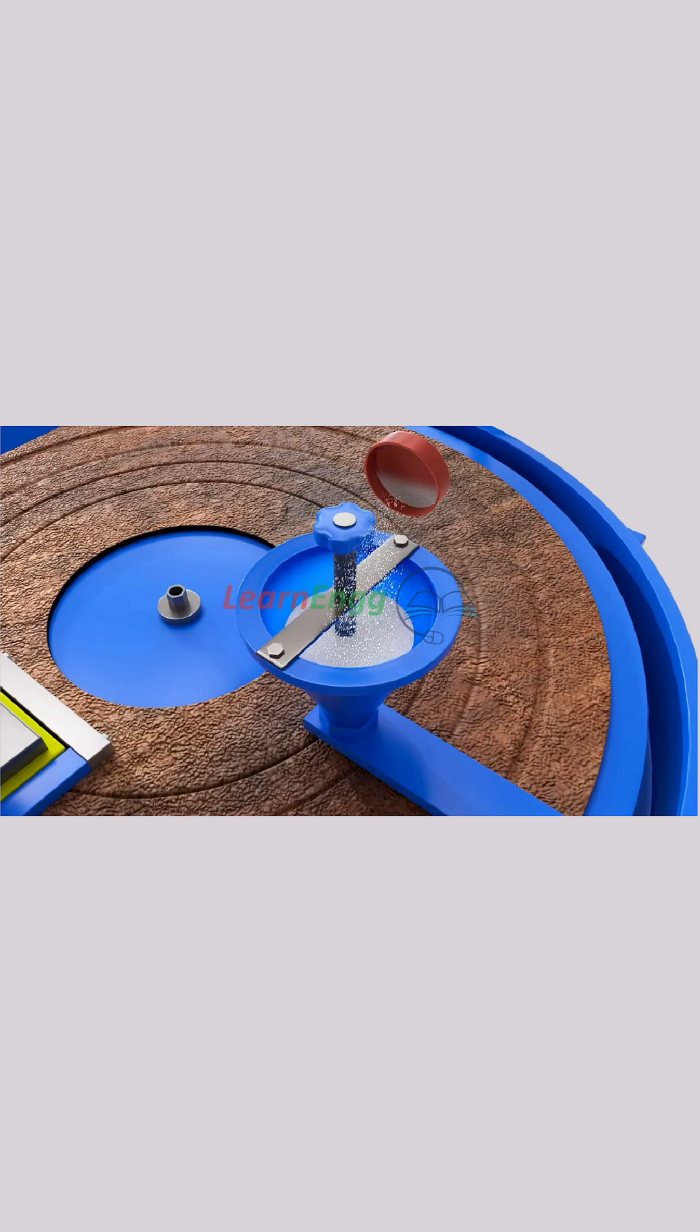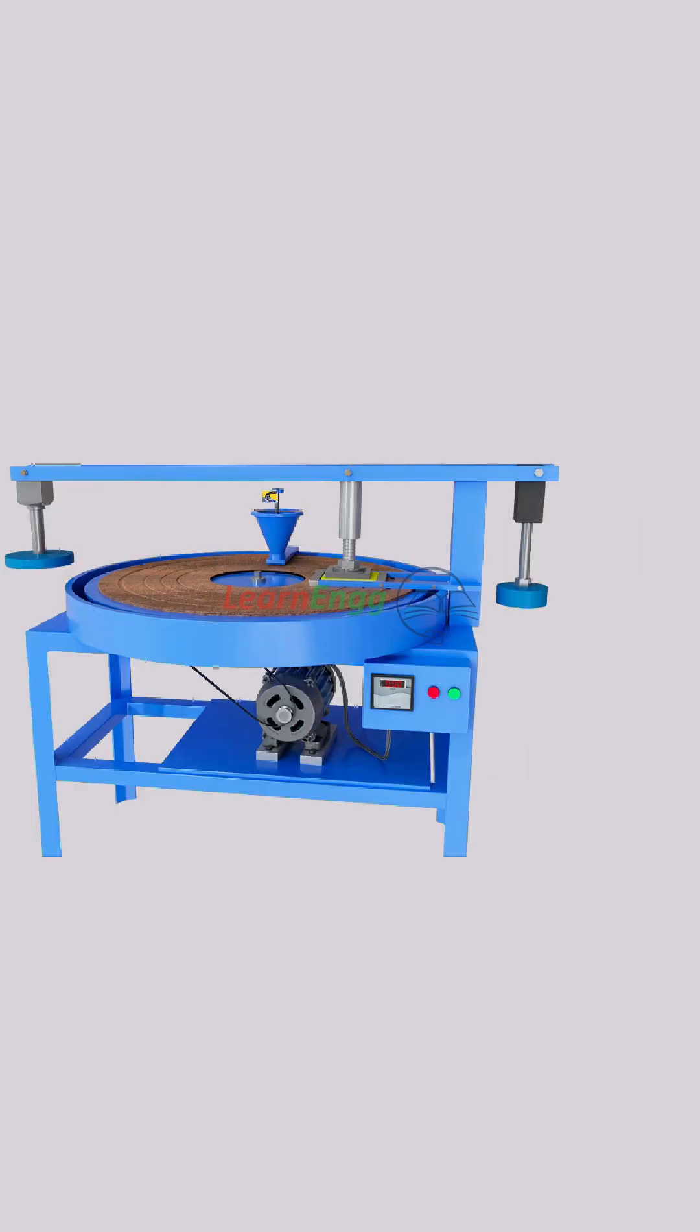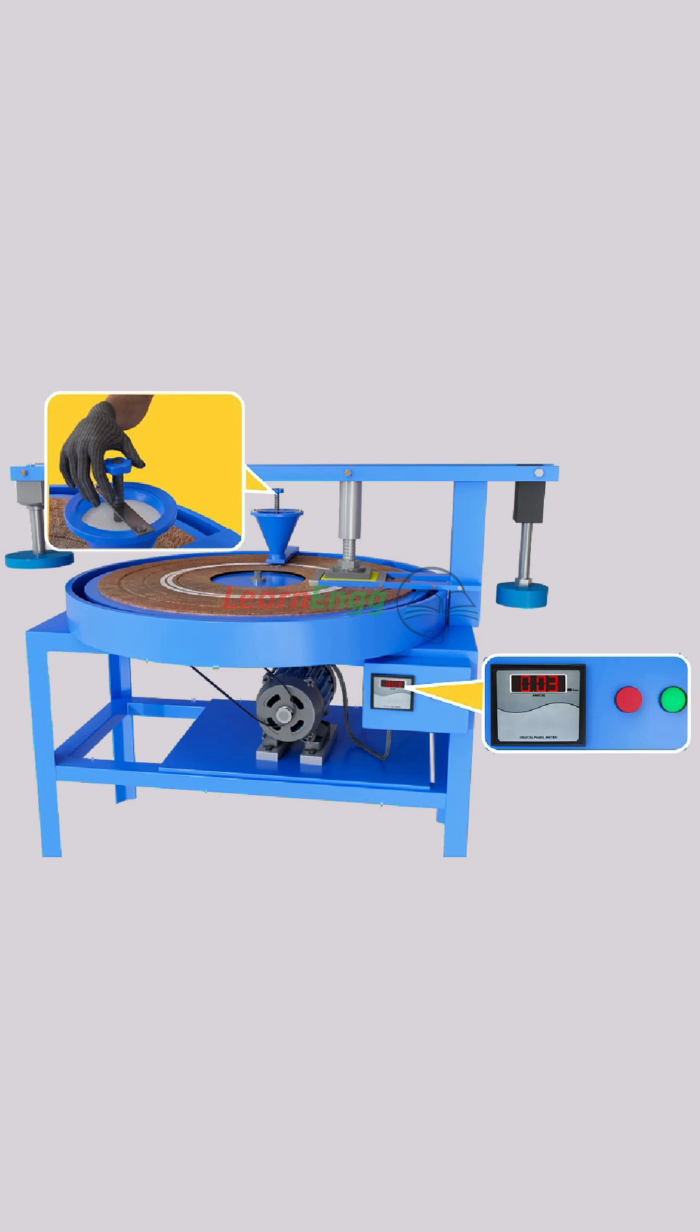Switch on the machine. Gradually release the abrasive powder in the grinding path. The test is carried out for 22 revolutions, that is one cycle.